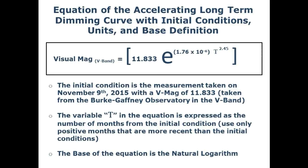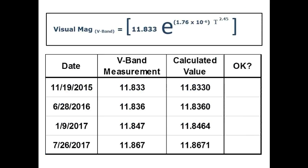Here is the visual magnitude equation of the accelerating long-term dimming curve of Tabby Star in the V-band with initial conditions, units, and base definitions. The initial condition is the measurement taken on November 9th, 2015, with a visual magnitude of 11.833, taken from the Burke Gaffney Observatory in the V-band. The variable t in the equation is expressed as the number of months from the initial condition — use only positive months more recent than the initial condition. The base of the equation is the natural logarithm. Comparing the measured V-band data with the corresponding calculated values using this equation, we have an extremely good match across all four data points.